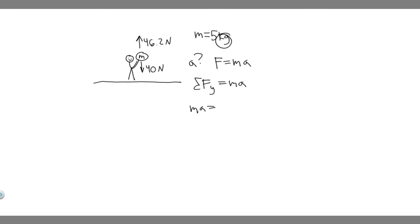So 46.2 is upwards, so it's positive. And then minus 40 because it's downwards. So essentially, the sum of the forces in the y direction are going to be equal to 46.2 minus 40. This is just going to be 6.2.